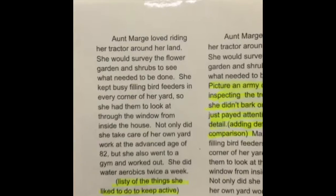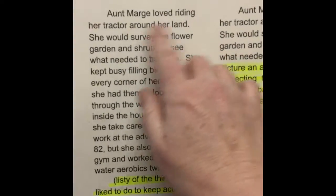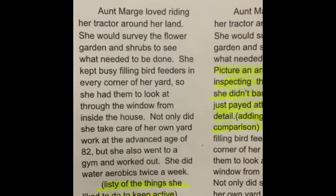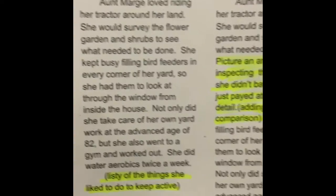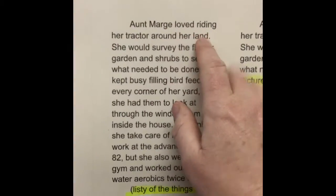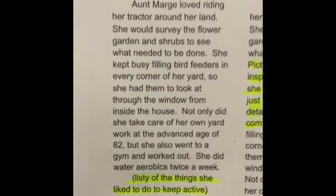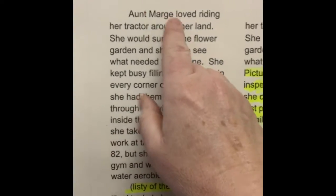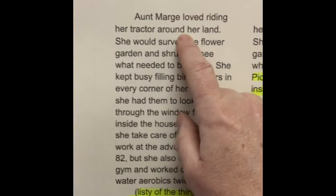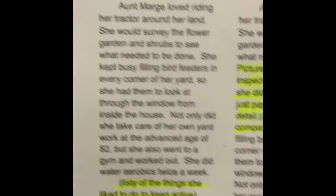So my first body paragraph — not super fantastic — it looks like this. Aunt Marge loved riding her tractor around her land. I didn't pick a really basic topic sentence like 'Aunt Marge was active.' This was my first attempt. But then I looked at it and thought the topic sentence makes it seem like the whole paragraph would be about her riding around on her land, so I did need to change that topic sentence.